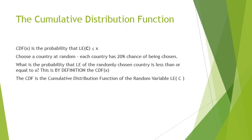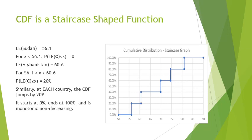The cumulative distribution function has a technical definition: for any number x, we ask what is the probability that a randomly chosen country will have life expectancy less than or equal to x. Since each country has a 20 percent chance of being chosen, the CDF values will be like 20 percent, 40 percent, and so on. This definition and its importance will be clarified further.